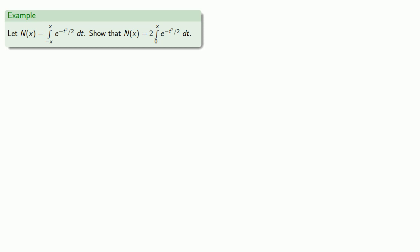Nevertheless, even though n of x is defined as a definite integral of this function, we can still find quite a bit about n of x. And so let's start off by showing that n of x is 2 times the definite integral from 0 to x.